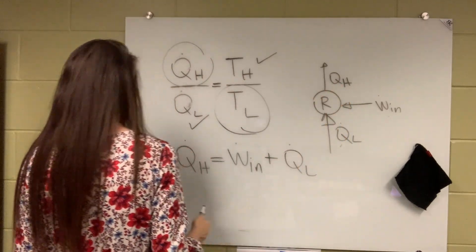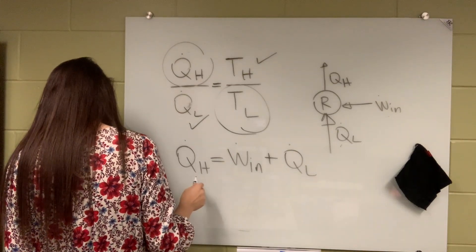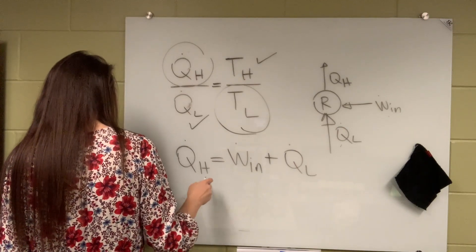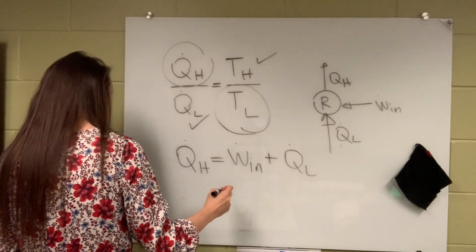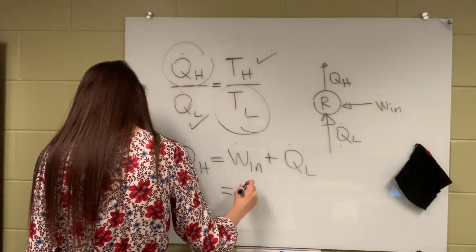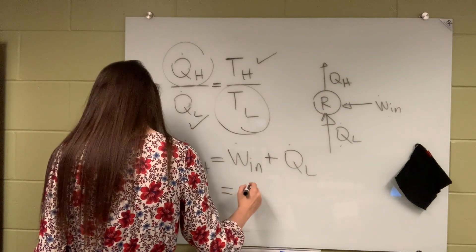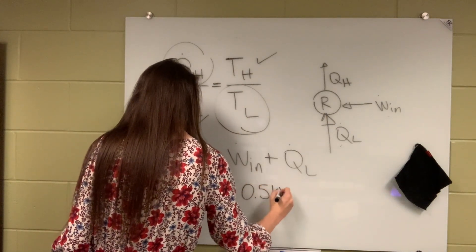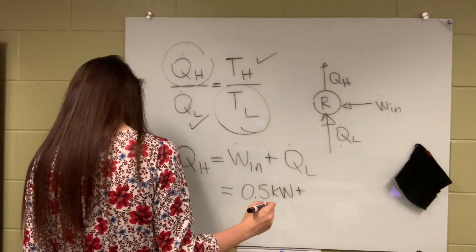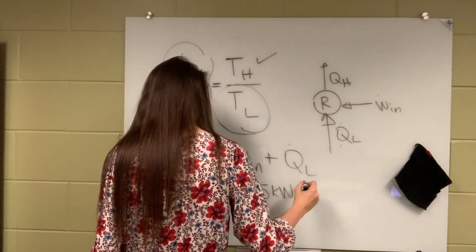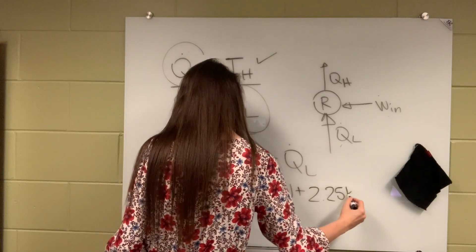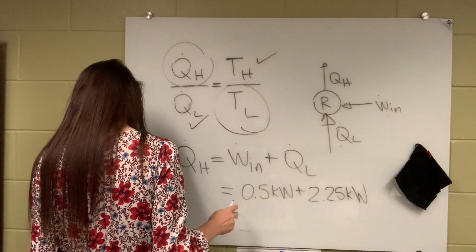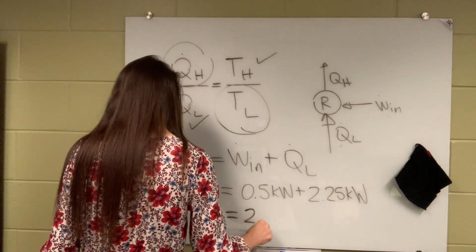So you don't need to memorize it. And from here and from here, what you can do is now you can calculate QH. So this gives us QH to be 2.75.